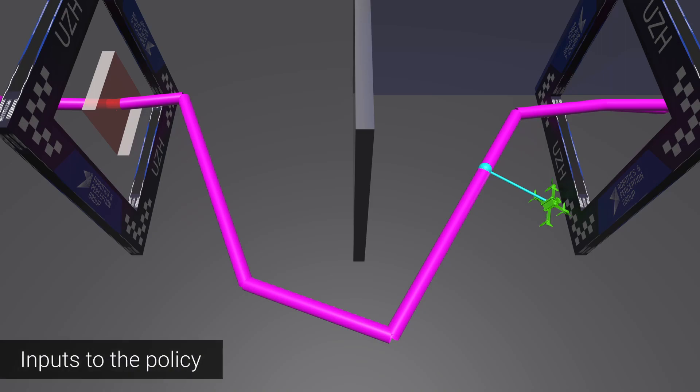The policy has access to the position, orientation and velocity of the vehicle. Furthermore, a novel formulation combining progress maximization and obstacle avoidance is proposed. The policy additionally has access to the bounding box of the next waypoint shown in red.